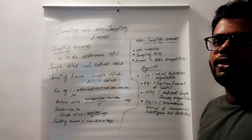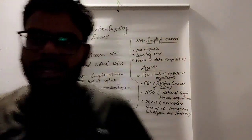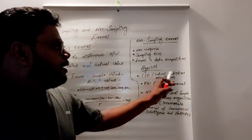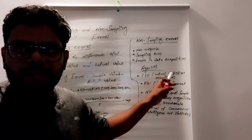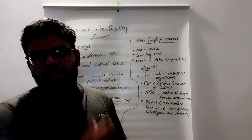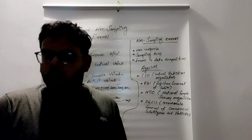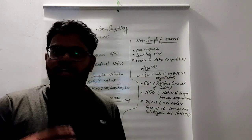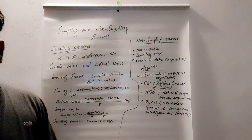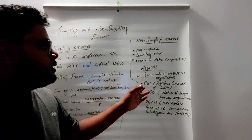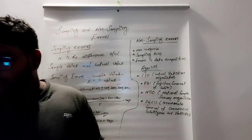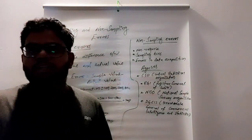This is the last topic of the chapter — the Statistical Agencies. The first agency is CSO, the Central Statistical Organization, which is responsible for data collection at the national level. The second agency is RGI, the Registrar General of India, which is the agency for Population Census.